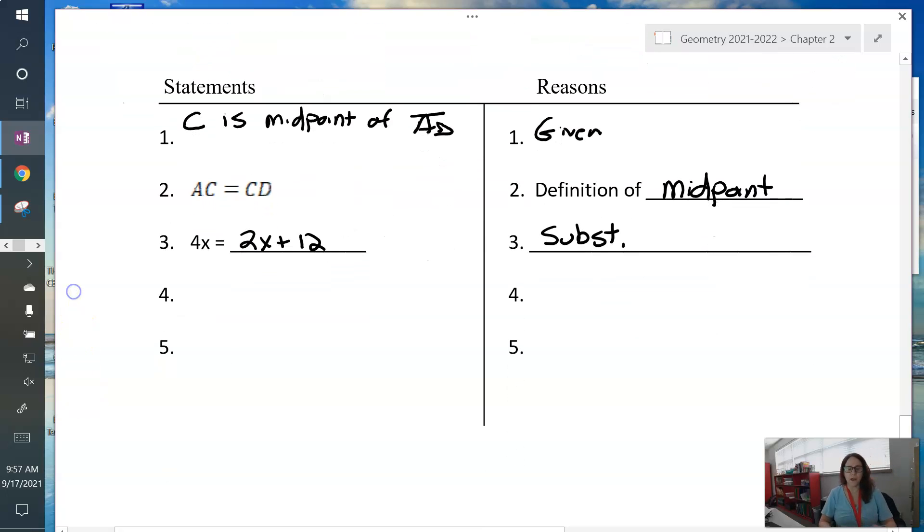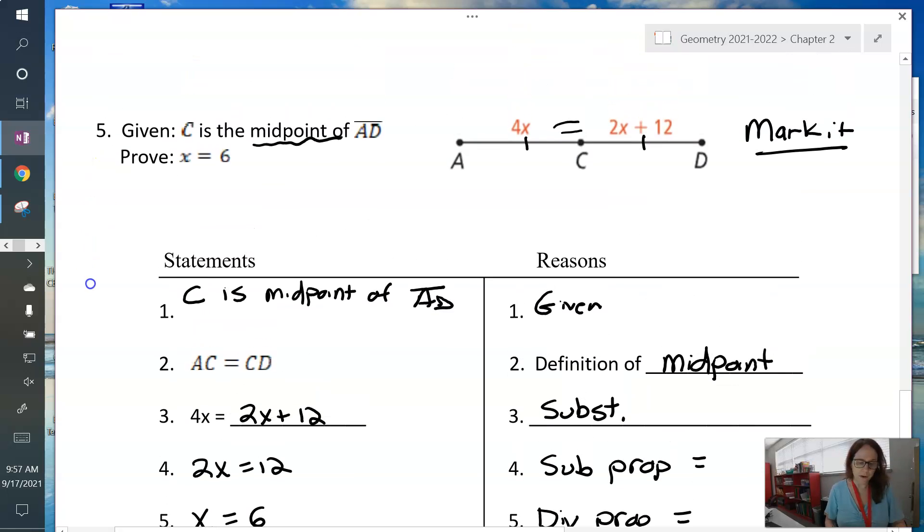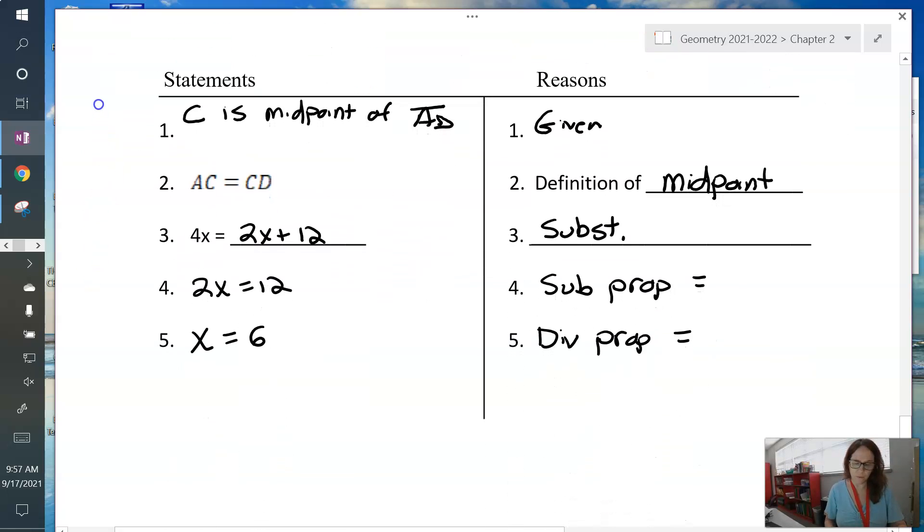Now I'm ready for my algebra. Let's subtract 2x from both sides. I get 2x equals 12. This is subtraction property. And then divide both sides by 2, x equals 6, for your division property. And that is what we were asked to do. Prove x equals 6. We've done it.